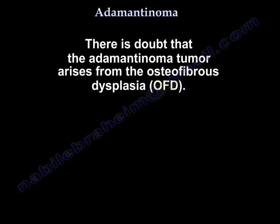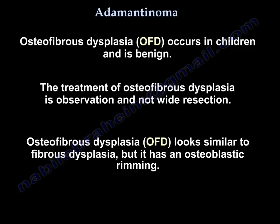There is a doubt that Adamantinoma arises from osteofibrous dysplasia. Osteofibrous dysplasia occurs in children. It is benign, and the treatment is observation and not wide resection. Osteofibrous dysplasia looks similar to fibrous dysplasia, but it has an osteoplastic rimming.